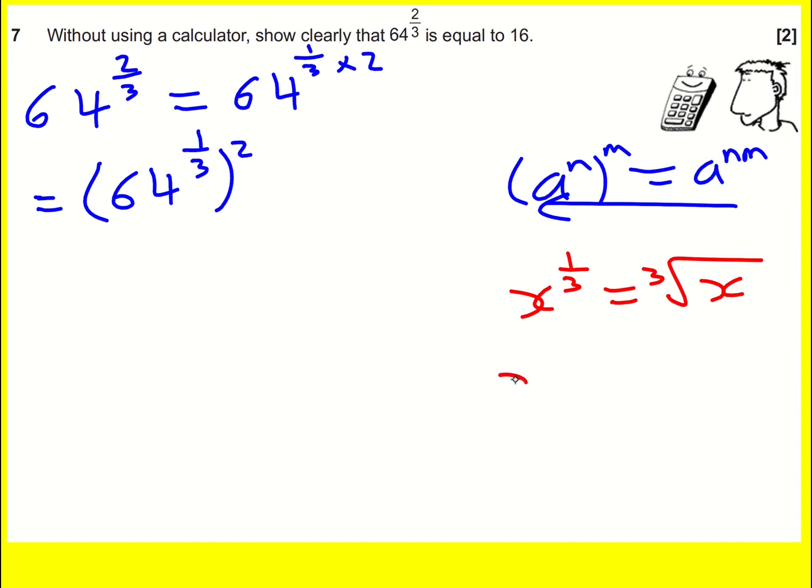If I cube x to the 1/3, then if I use this first rule above, then it will become x to the 1/3 times 3, which is x to the 1, which is x. And if I take the cube root of x...